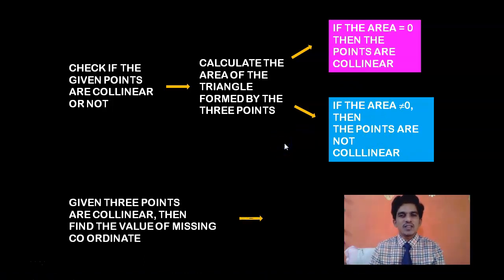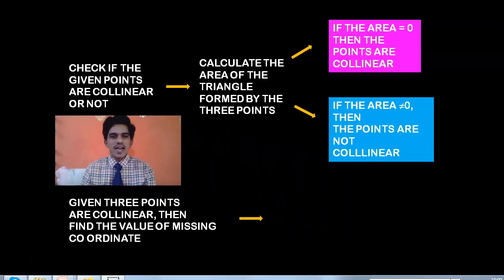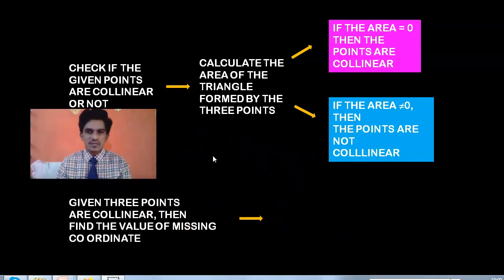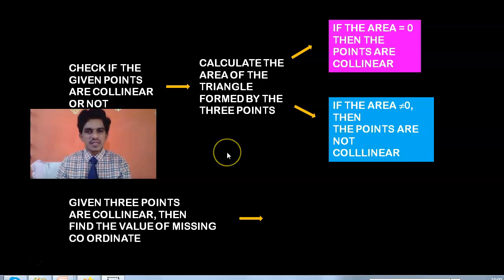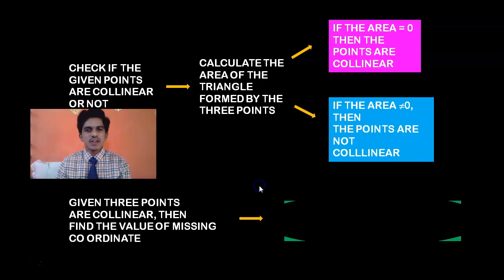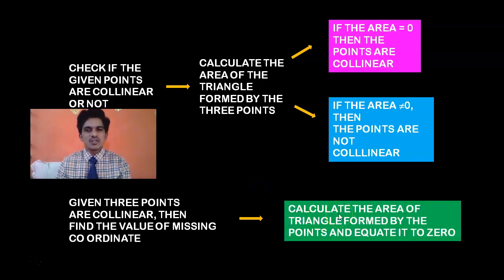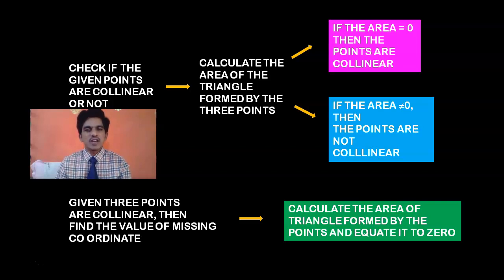The second type: given that 3 points are collinear, find the value of a missing coordinate. In this case some coordinates will be missing — an x or y from one of the points. You calculate the area using the formula with the variable, equate that area to 0, and solve the resulting linear equation. Sometimes you may get a quadratic equation as well.